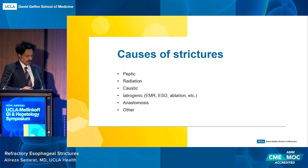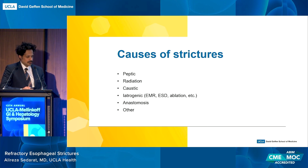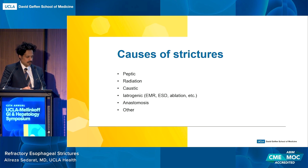There are others — caustic, the occasional caustic injection, accidental or intentional. Sometimes we cause strictures with our therapies, the occasional anastomosis. There are other rare diseases that can cause strictures that are far less common. Most of the time we're talking about peptic, and the tough ones are often the radiation ones.